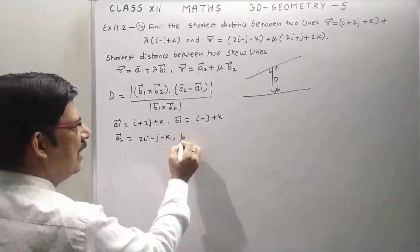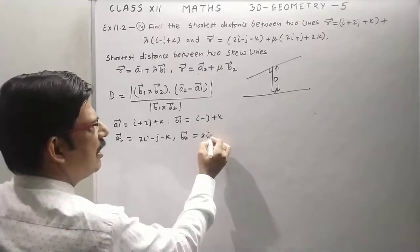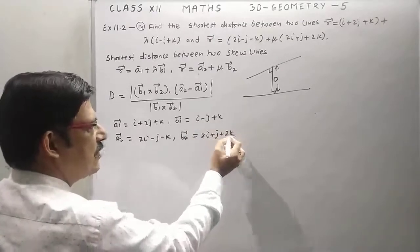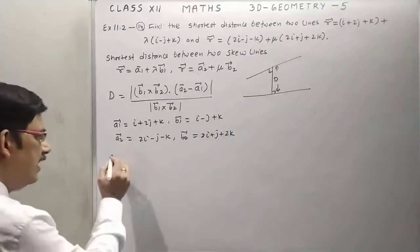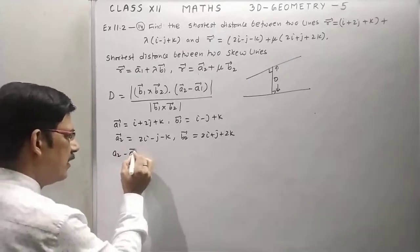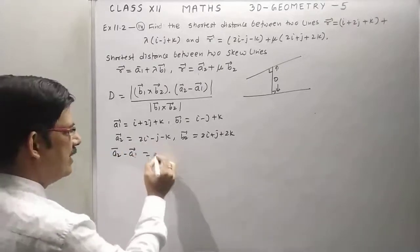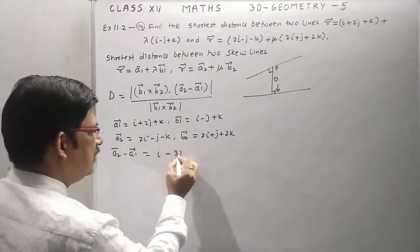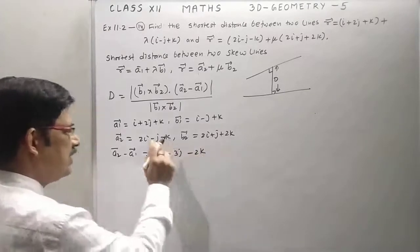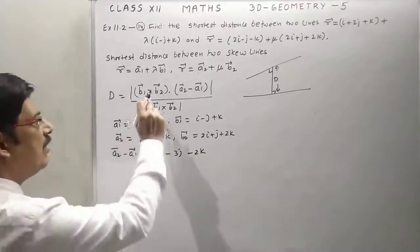a2 is equal to 2i minus j minus k and b2 is equal to 2i plus j plus 2k. First of all compare, now find a2 minus a1. We have i minus 3j minus 2k, just subtract these two.